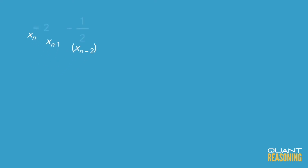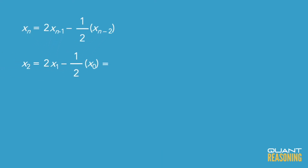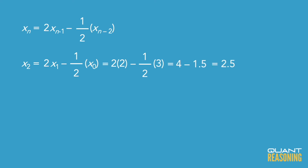Plugging in two for x1 and three for x0, we can solve for x2. It would be two times two minus half times three, which ends up being two and a half.